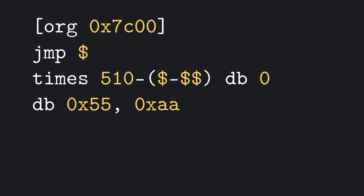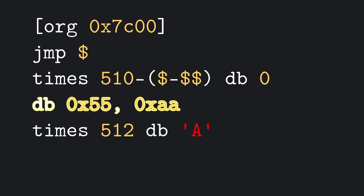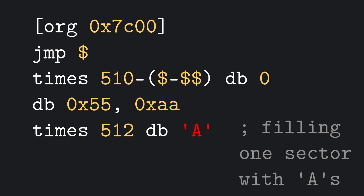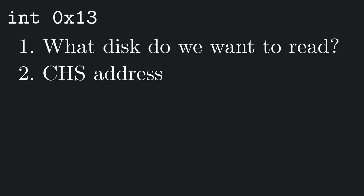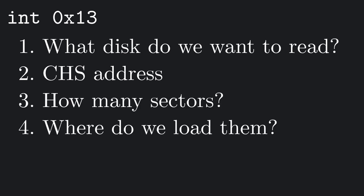In order to have something to read, I will define the character A 512 times after our magic booting number. Now we will read one sector from our disk. First of all, what information do we need? Well, we should know what disk we want to read, what cylinder, head and sector we want to read it from, how many sectors we want to read, and where in memory we want to load it.